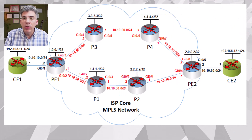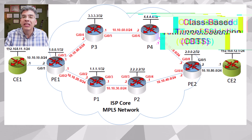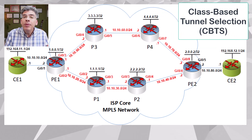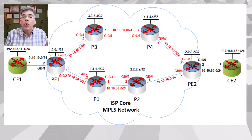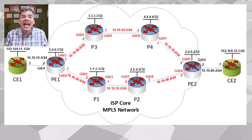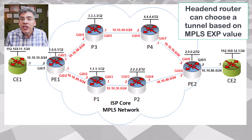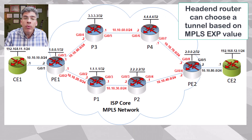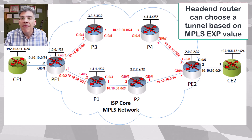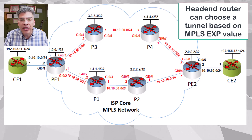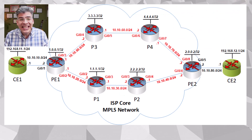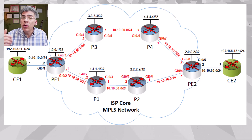In this video, we'll take a look at a feature called class-based tunnel selection. When there are multiple tunnels configured within the head-end router, CBTS is a feature that allows the head-end router to choose which tunnel will be used to forward traffic based on the EXP values found in the MPLS-TE header of each packet. I know all of this needs a bit of explanation, so let's get going.